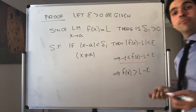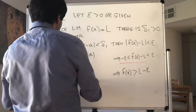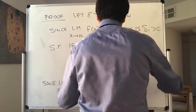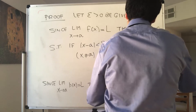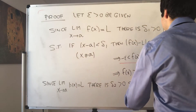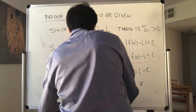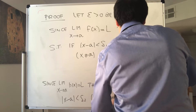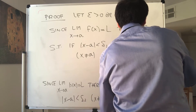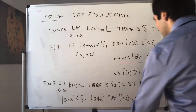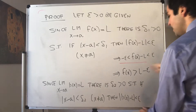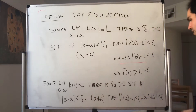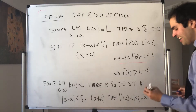On the other hand, we repeat the same argument but with h. Since the limit as x goes to a of h of x equals l, there is some delta two positive such that if |x minus a| is less than delta two with x not equal to a, then |h of x minus l| is less than epsilon. By the same token, this implies h of x minus l is less than epsilon — and you'll see it goes the right way because h is the bigger function.